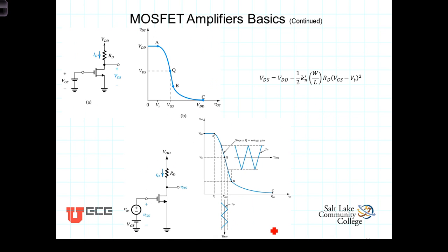So the bias point Q is located somewhere between the cutoff region and the triode region. And generally speaking, it will be located somewhere in the midpoint so that there's plenty of headroom and footroom for variations in this VGS voltage, which will then correspond to variations in the output voltage.